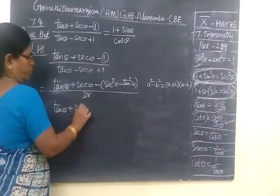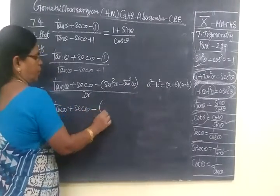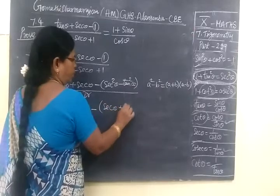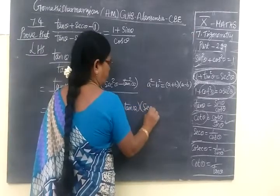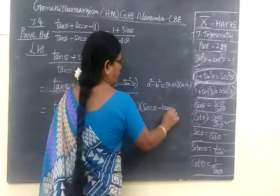So tan θ + sec θ minus - A + B. So this is easier. A - B.